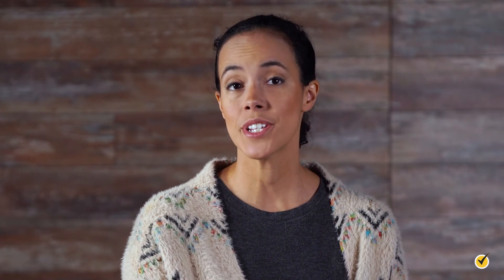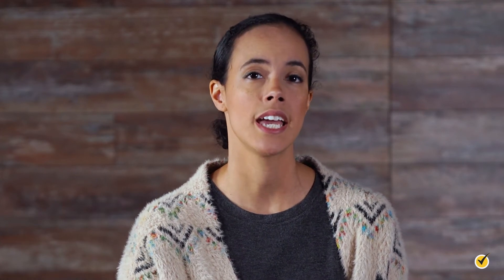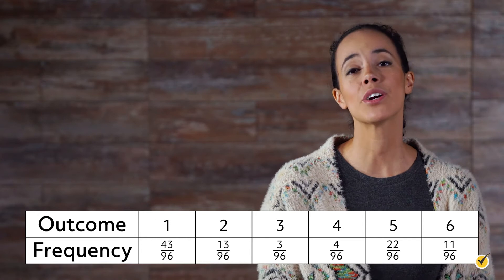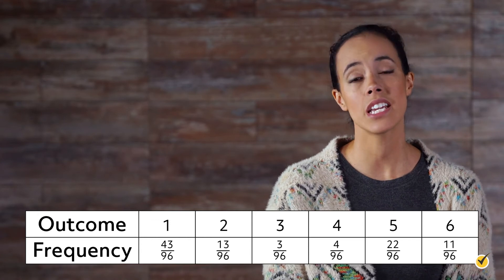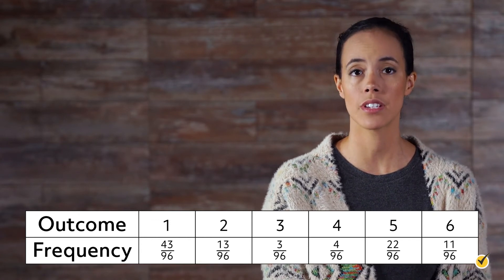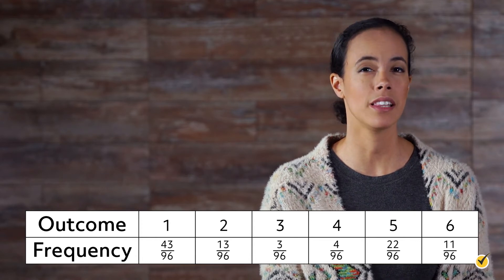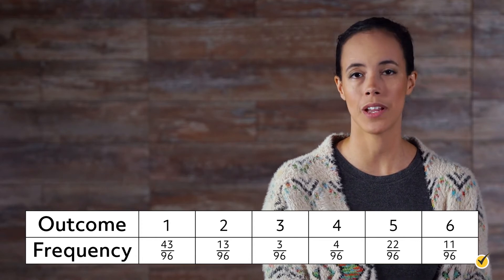It's also important to note that theoretical probabilities don't change. The theoretical probability of rolling any number on the number cube is always one out of six. Suppose you decide to try the experiment again the next day and get these results. The empirical probabilities here are very different, and you might come to a different conclusion than in the first round.